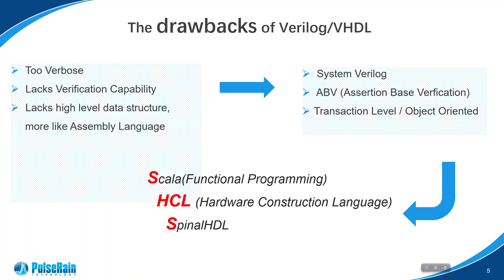The design done in HDL — whether it's VHDL, Verilog, or SystemVerilog — is still too verbose. Practically, my experience is that for the same design, the number of lines in Spinal HDL is only half of that in SystemVerilog. Secondly, HDL lacks high-level data structures for design. Although SystemVerilog has introduced some high-level features like object-oriented classes, they are mainly used for verification. The design in HDL is still done with very low-level constructs like 'always' for Verilog or 'process' for VHDL. To use a programming language analogy, HDL is more like assembly, while HCL is more like a modern high-level programming language.